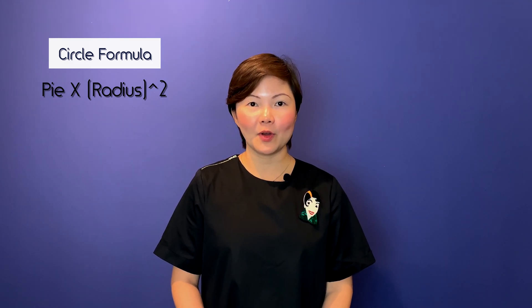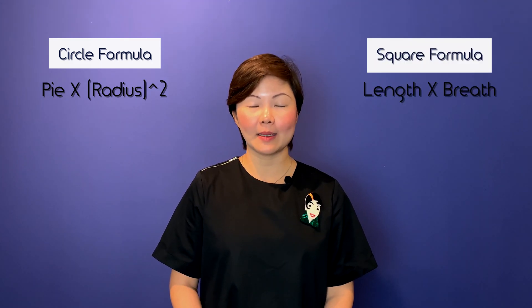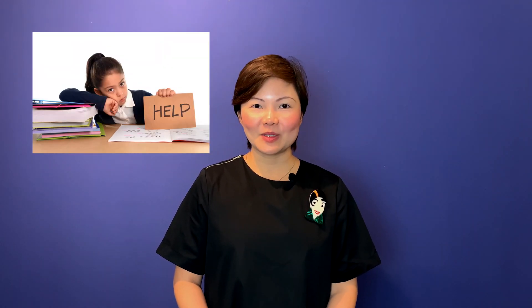This is a difficult question that primary 6 pupils will tend to see during exams. Now the pupils have learnt the formula of the circle, which is pi r square. They have also learnt the formula of a square, which is length times breadth. But the interesting part is that they are not able to apply the formula they have learnt into this question. So how are we going to solve this question? Let me show you how.